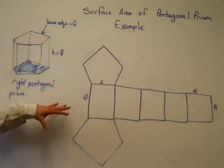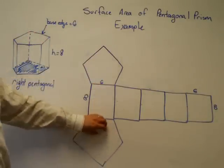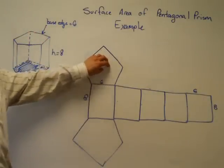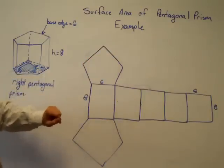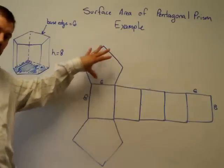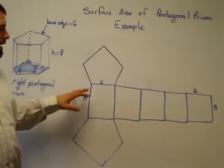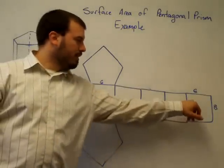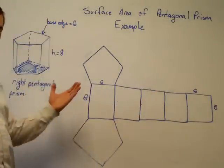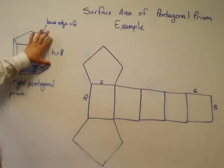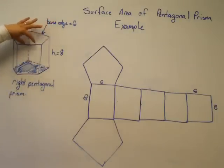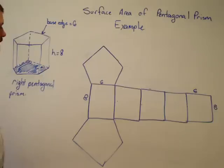So, to find the area of this, I need to find the area of two pentagons, which are congruent. We really only have to do it once. So this picture doesn't even matter down there, except to remind me to double my answer from here. And then, one, two, three, four, five rectangles, which are all congruent, because they all have heights of eight and base edges of six, going all the way across.